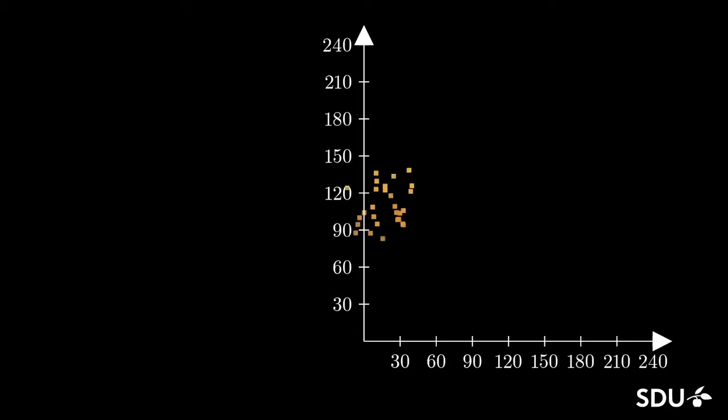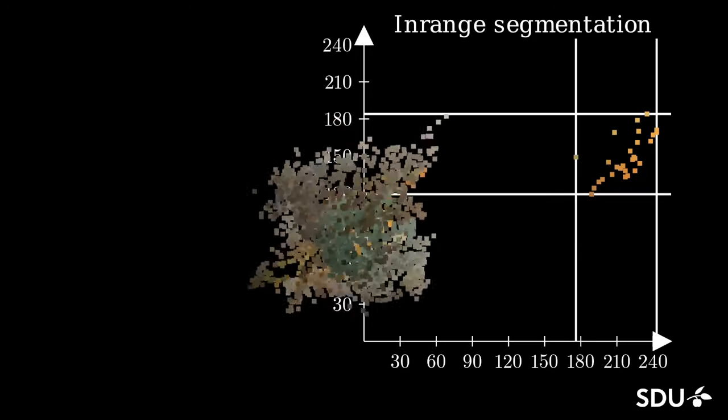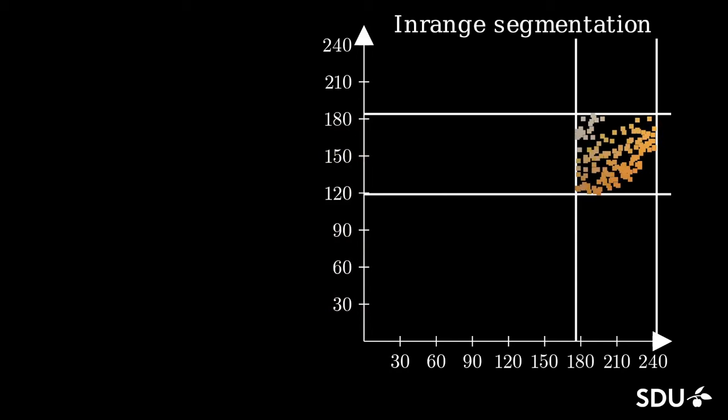We can then do some statistics on the color values of these elements by showing them in a coordinate system with red and green on the axis, and then figure out what is a minimal box that contains all the annotated elements.